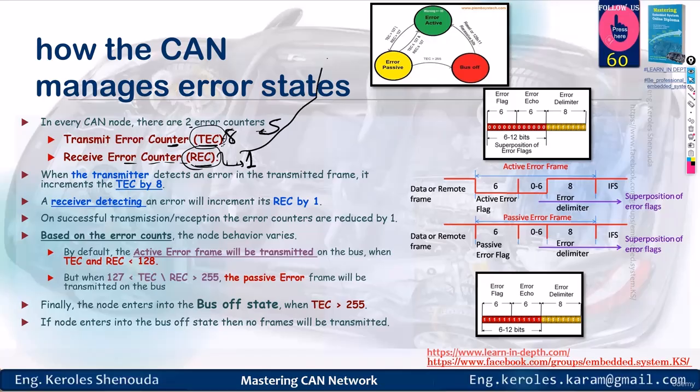If any of these counters exceed 96, it indicates the controller is in the error active state. If the count continues and surpasses 127, your controller enters the passive error state. If it goes beyond 255, you've entered the bus off state.